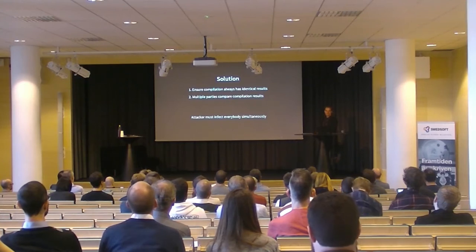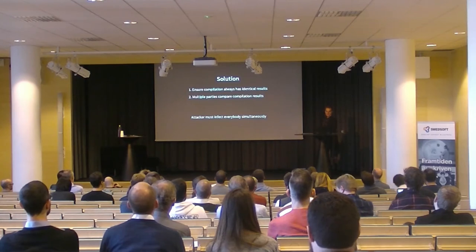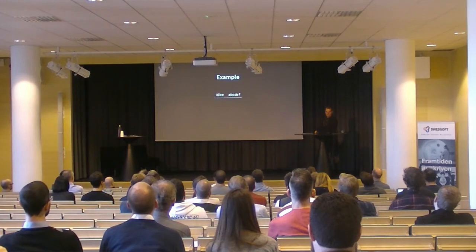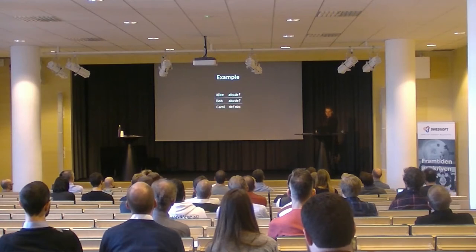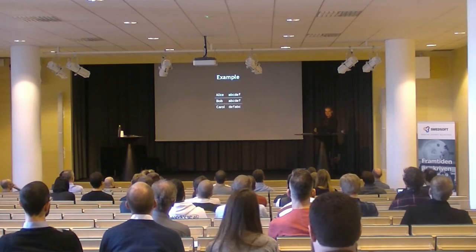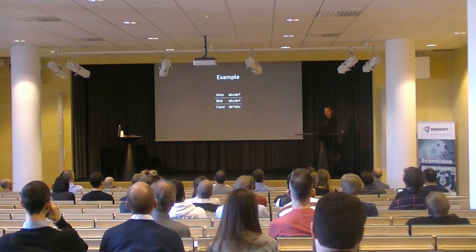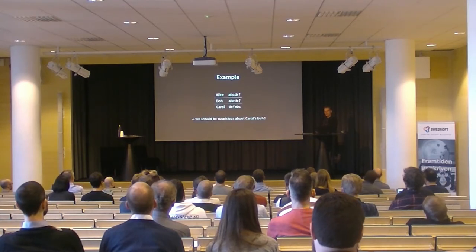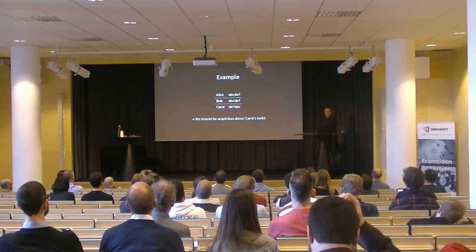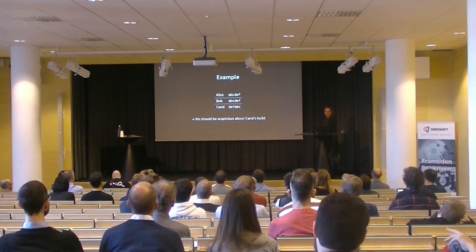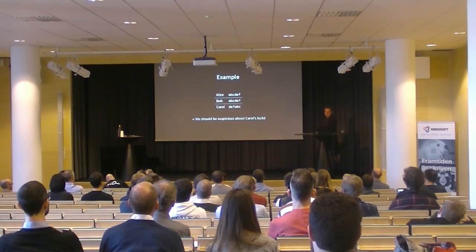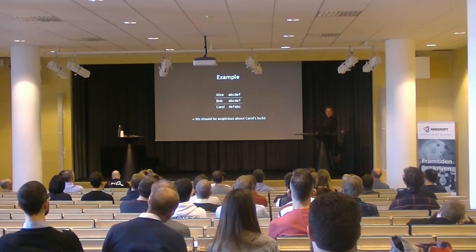Therefore, an attacker must infect everyone simultaneously. For example: if Alice compiles nginx and gets a checksum of abcdef, and Bob also gets abcdef — great. But Carol gets defabc with the same source, same build environment, same toolchain. We shouldn't trust Carol's build, because we don't know why — maybe her compiler, maybe anything in that toolchain is now suspect. That's basically how we do it.